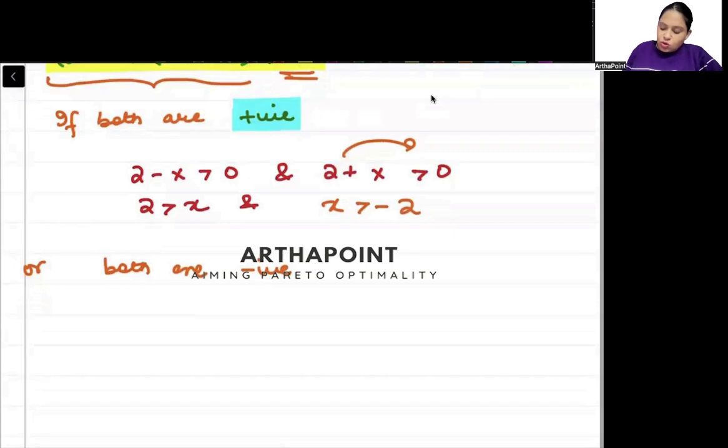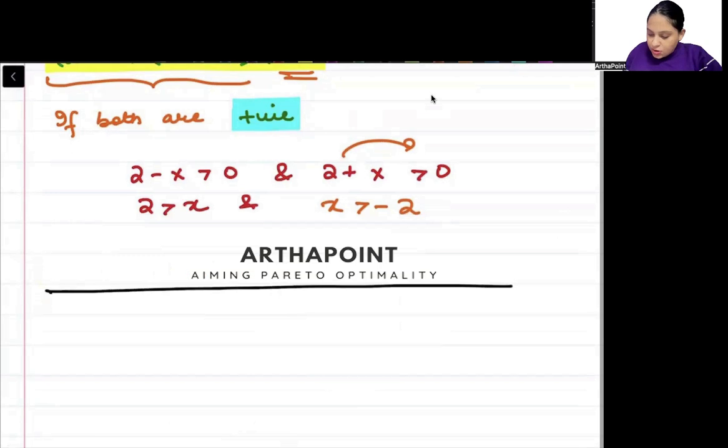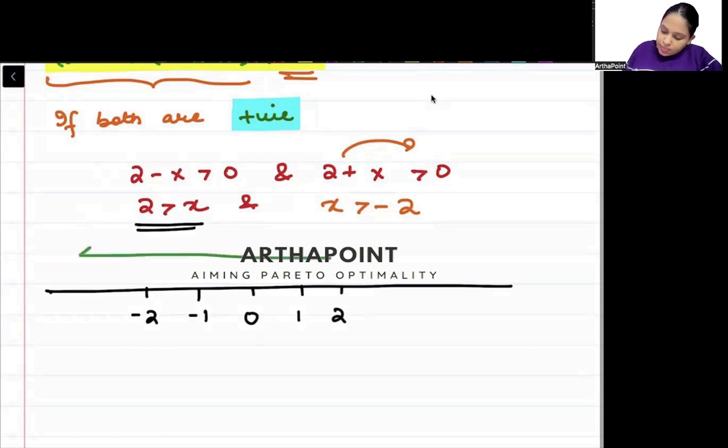If I go ahead and plot this on the number line: here is minus 2, minus 1, 0, 1, 2. x less than 2 is coming from here, and x greater than minus 2 is coming from here.